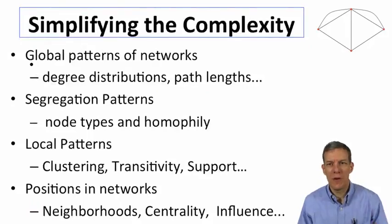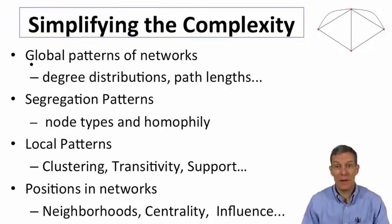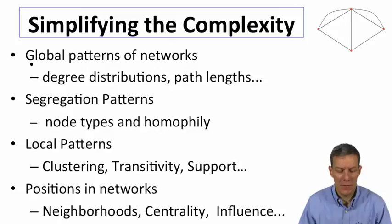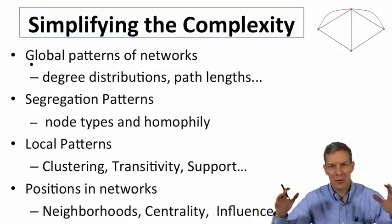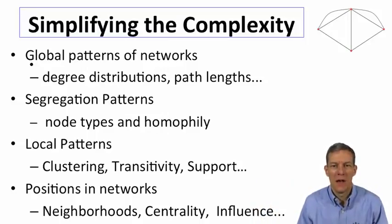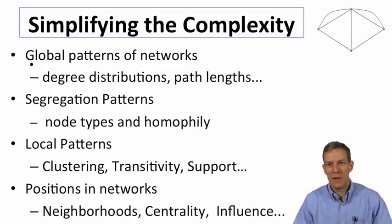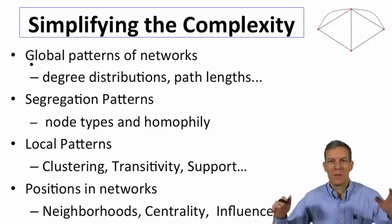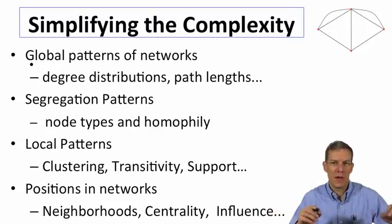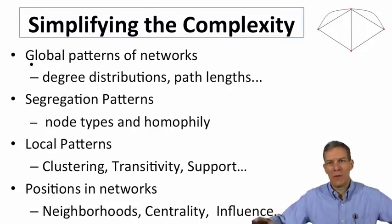In terms of simplifying the complexity that we're facing in describing networks, we're going to think about different kinds of patterns. One is global patterns of networks, overall big picture items. How are the different connectedness of individuals distributed through the society? Are there some people who are really well connected and serve as hubs and other people who are not so well connected, or is everything very evenly distributed?